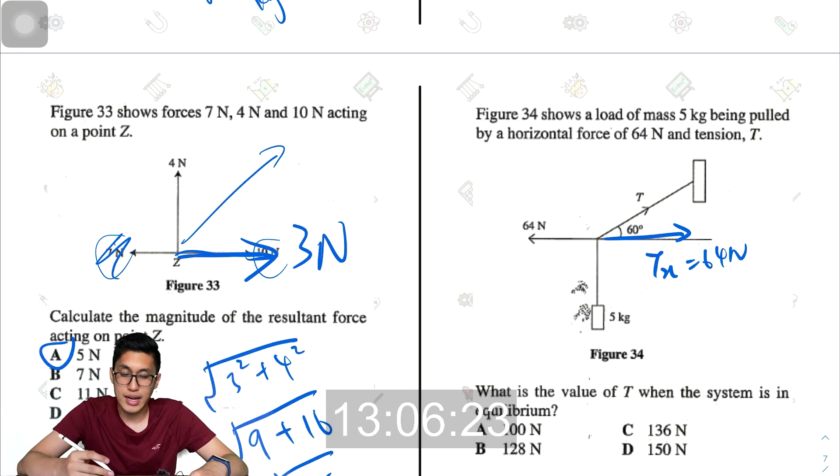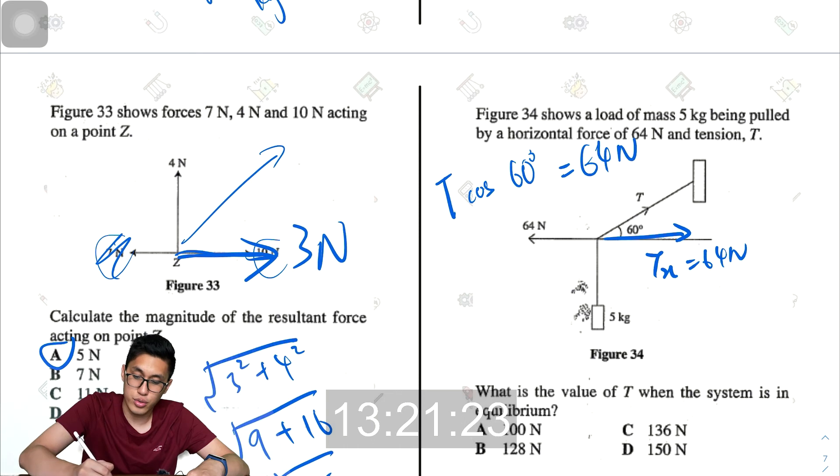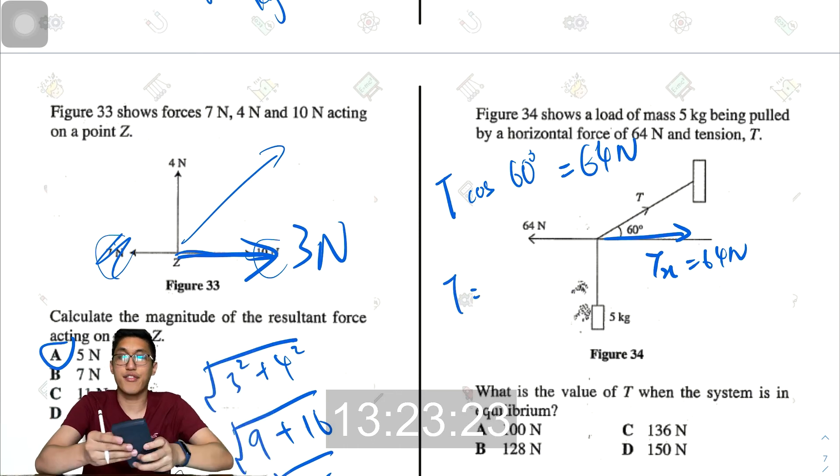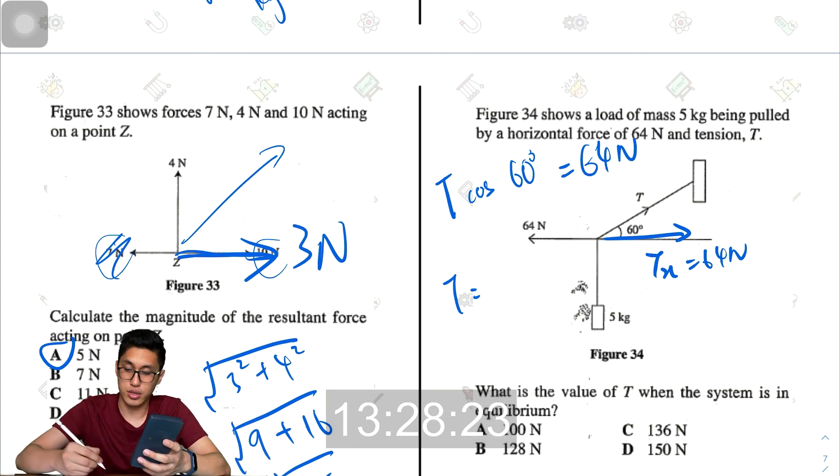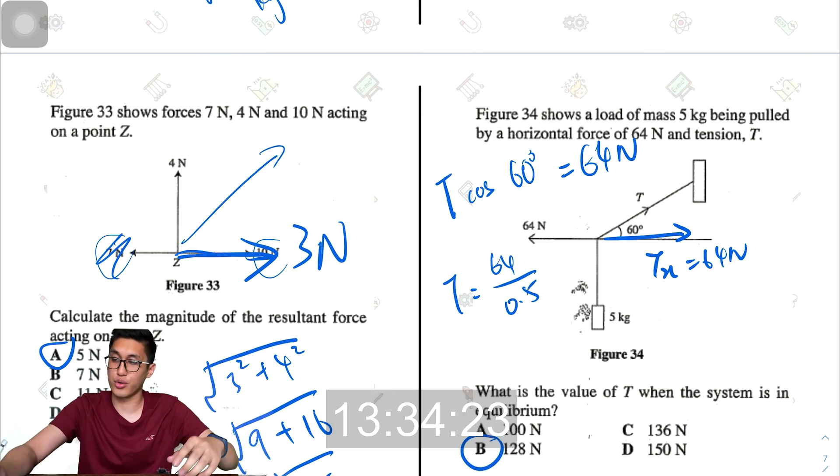And to get the horizontal component of T, I have to use T cos 60 degrees. T cos 60 degrees equals 64 newtons. So to find T, I'll just take 64 newtons divided by cos 60. So I'll get 64 divided by 0.5, which is 128 newtons.